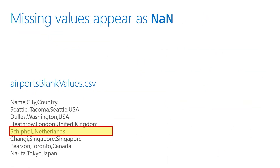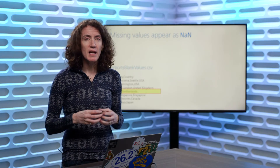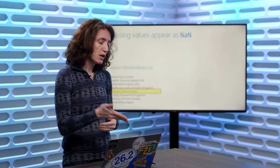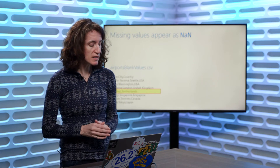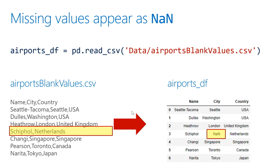If you have any missing values, one of the things to get used to when working with Python and pandas specifically is NaN — that's the way blank values are going to appear. So if we take a look at this file, you can see the record for Schiphol Airport in the Netherlands has no city value specified. So when I call read_csv, you'll see that it shows NaN as the value for the city for Schiphol.